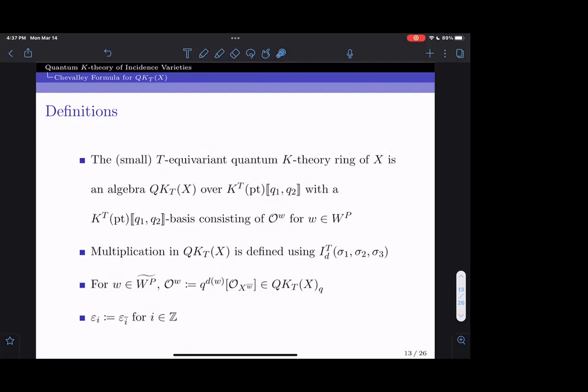To state our formulas in a simple form, we simplify the notation for a power of q times an opposite Schubert class by reversing the reduction mod n process to get an element in W^p from the degree and the Schubert class. This element lives in the equivariant quantum K-theory ring of X localized at the q variables because it's fine to allow negative components in the degree. Finally, for an integer i we will write epsilon_i for the character epsilon_i bar.